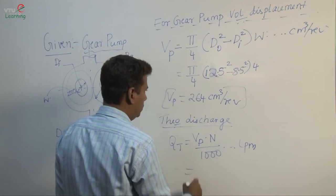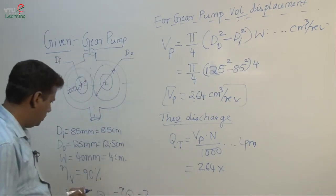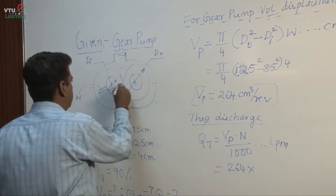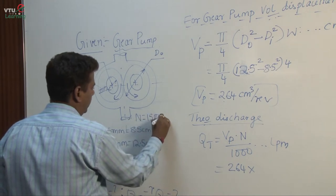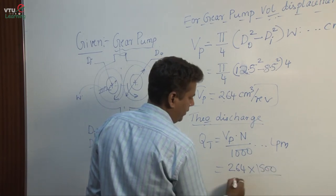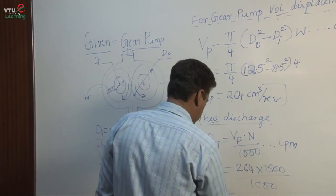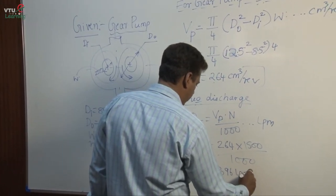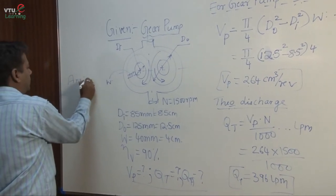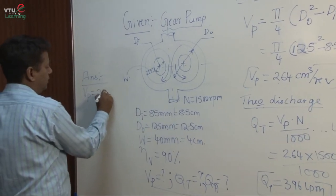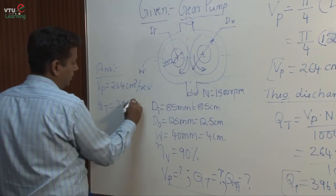Theoretical discharge for a gear pump: Qt = displacement × N / 1000, with units in liters per minute. Substituting Vp = 264 cm³/rev and N = 1500 rpm: Qt = 264 × 1500 / 1000 = 396 liters per minute. So Vp = 264 cm³/rev and Qt = 396 LPM.